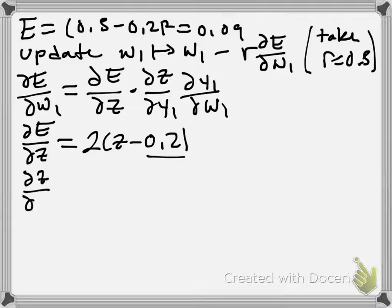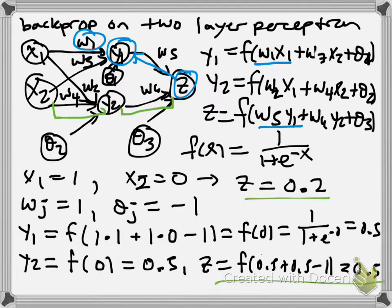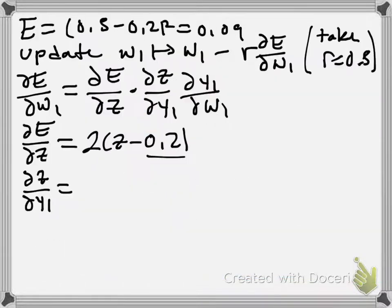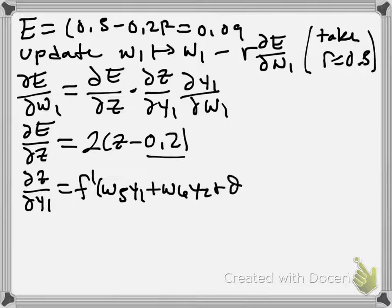So dZ/dY1, okay? Well, if we look at what Z is, it's just a function that we can differentiate, and then we apply the chain rule to differentiate it with respect to Y1.